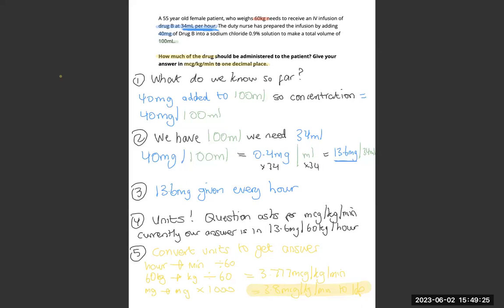So a tough question, this one. What it requires you to do is you need to figure out how much of the drug the patient is going to receive because from the question, you've got 40 milligrams in 100 ml. So you have to calculate for 34 ml.